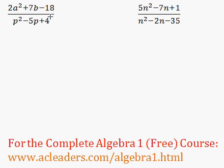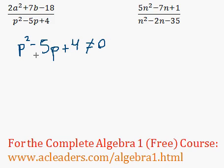Now let's find the restricted values for this rational expression. So p squared minus 5p plus 4 cannot be equal to 0. And remember that we have a trinomial here, so we can actually factor this trinomial.